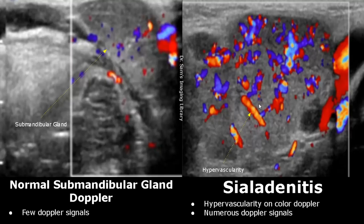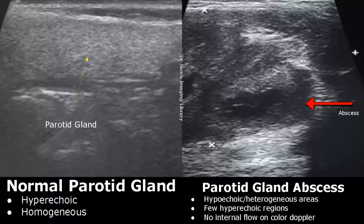In a parotid gland abscess, we will find hyperechoic and heterogeneous areas, along with some hypoechoic areas. We will not see any internal flow on color Doppler — no color flow will be seen inside the abscess.